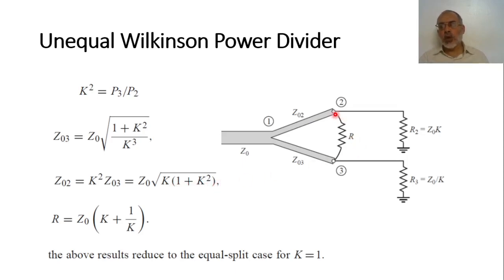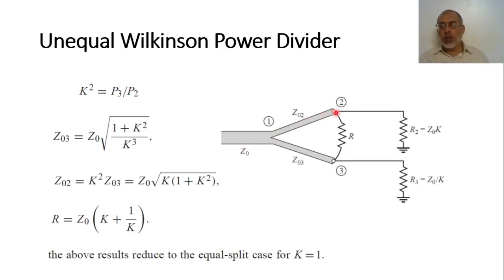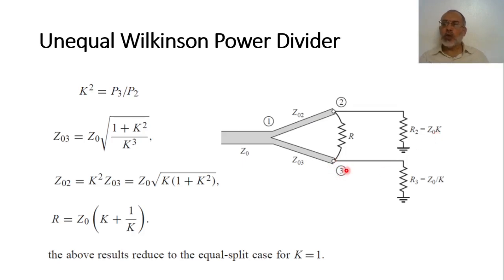Instead of the resistance being 2 Z-naught, the resistance between the two arms of the power divider in this case would be R equals Z-naught multiplied by (K plus 1 over K). It should be noted that the output ports of the unequal Wilkinson power divider will not be terminated to Z-naught. The power at port 2 will be matched to a transmission line of characteristic impedance Z-naught multiplied by K, and at port 3 it will be matched to a characteristic impedance of Z-naught over K.